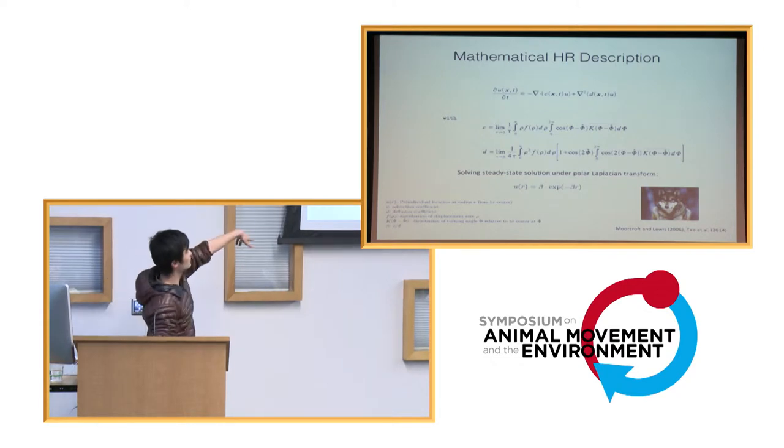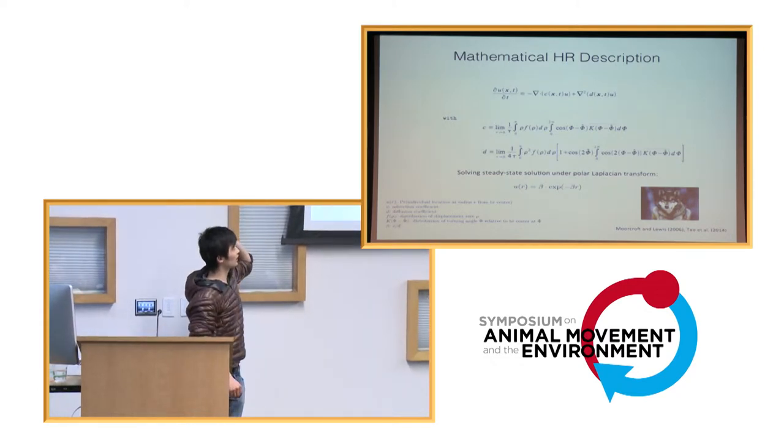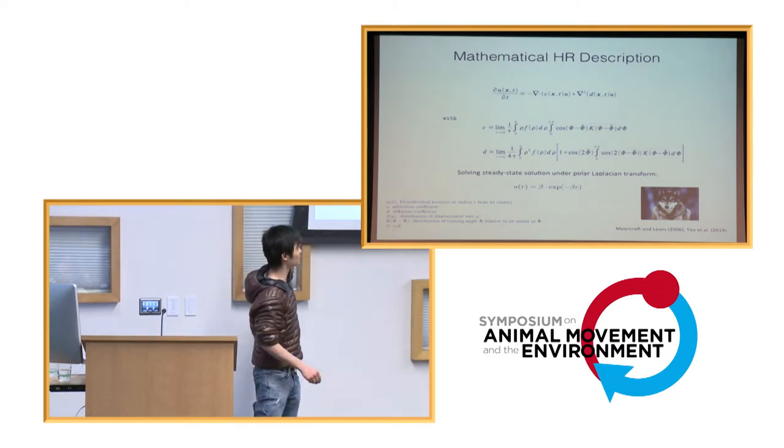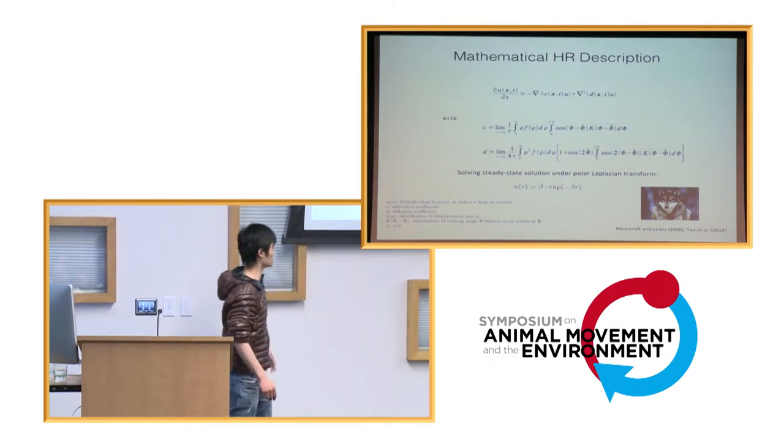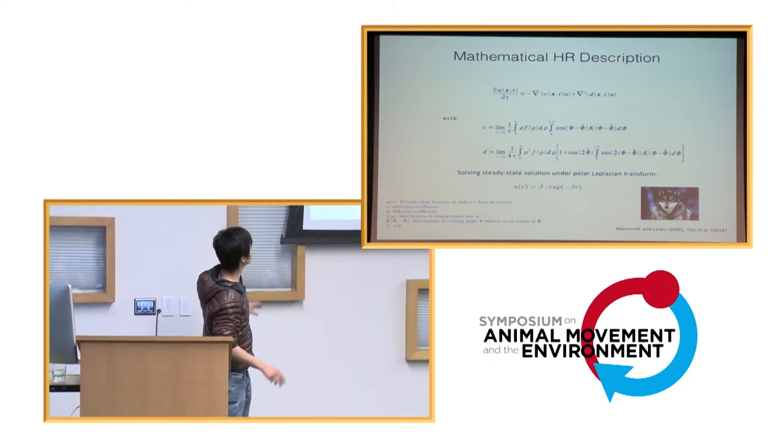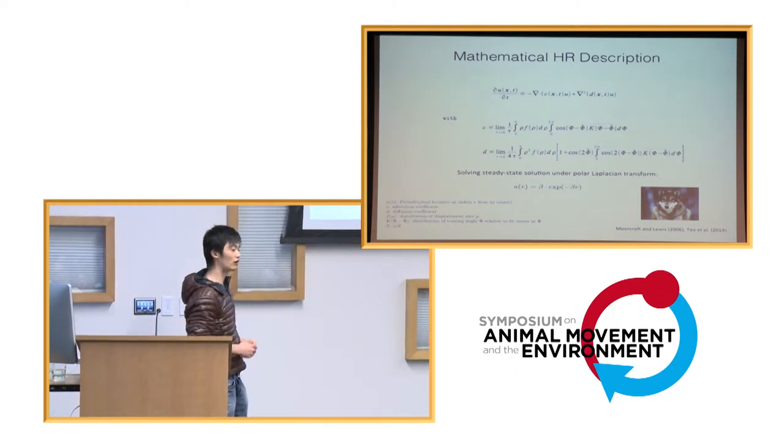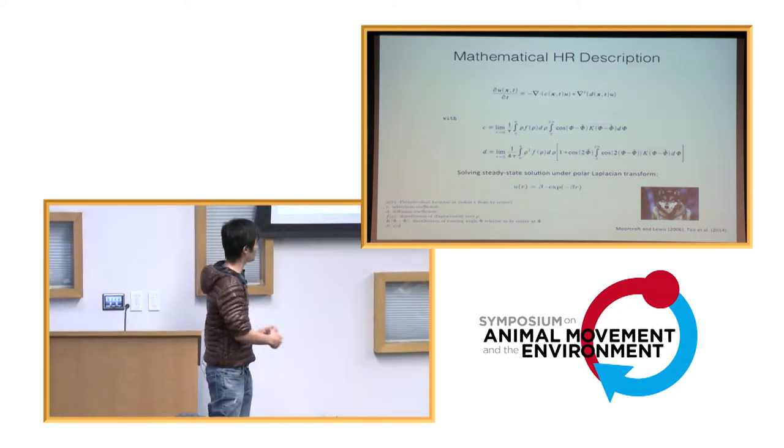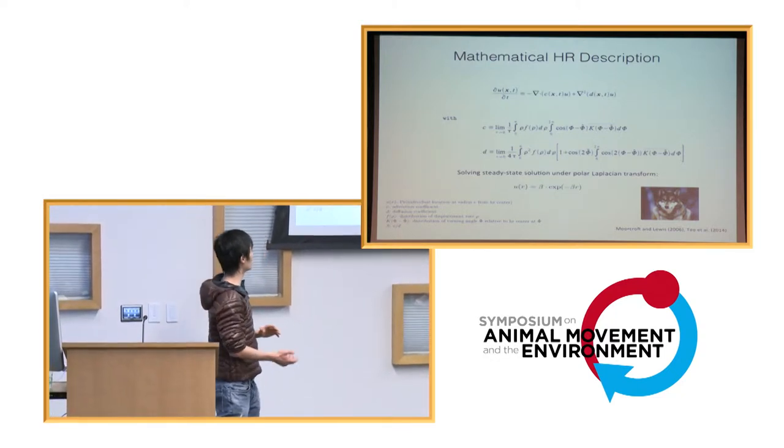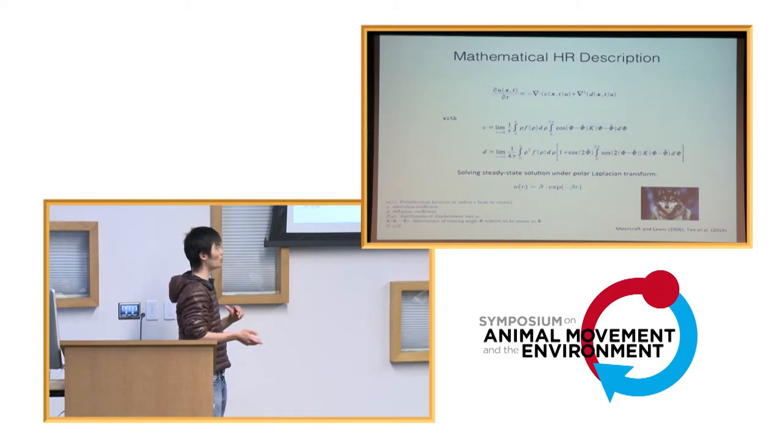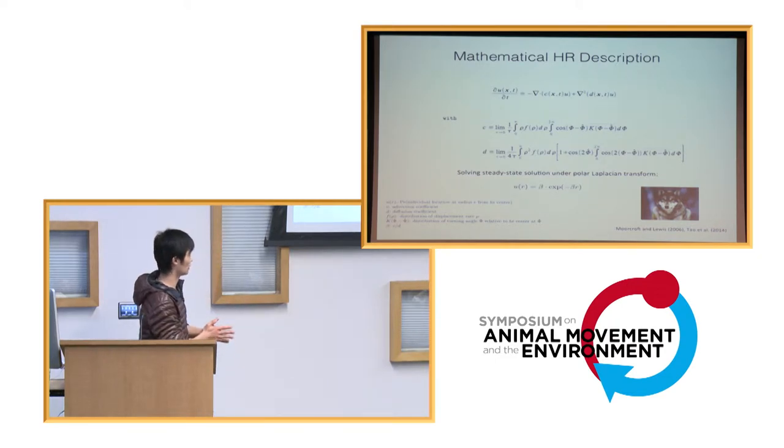But then if you take out the advection and the diffusion term and take out its coefficient, you can see that it gives you these very ugly expressions for both of them. So these are functions of both the distribution of displacement rate, how far an individual can move per time increment, as well as an orientational distribution that determines where an individual would go relative to the position of its home range center.